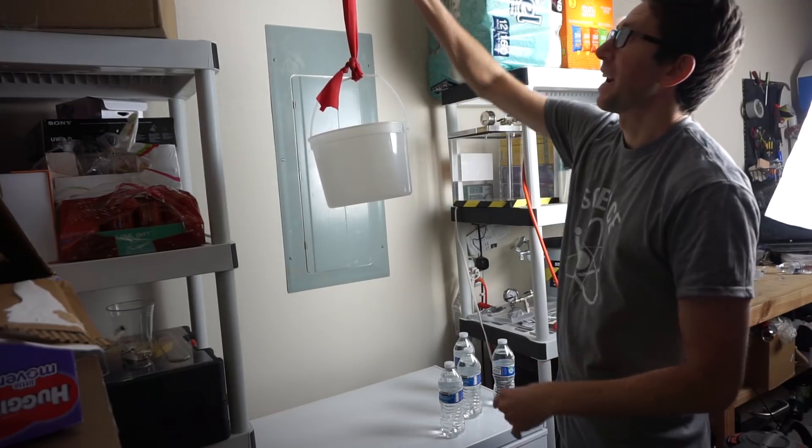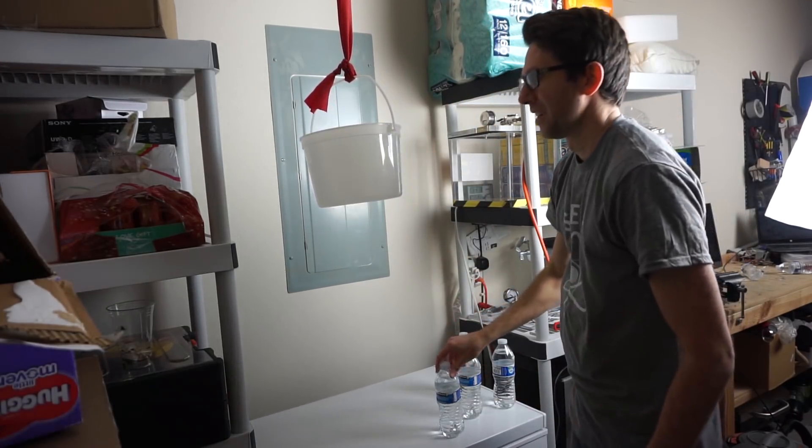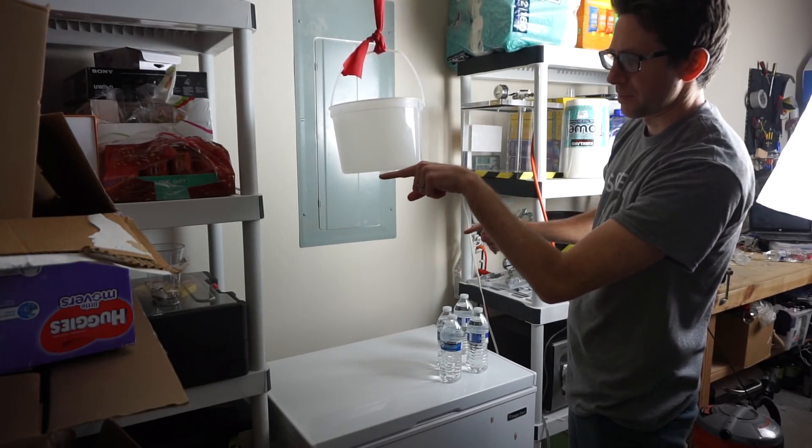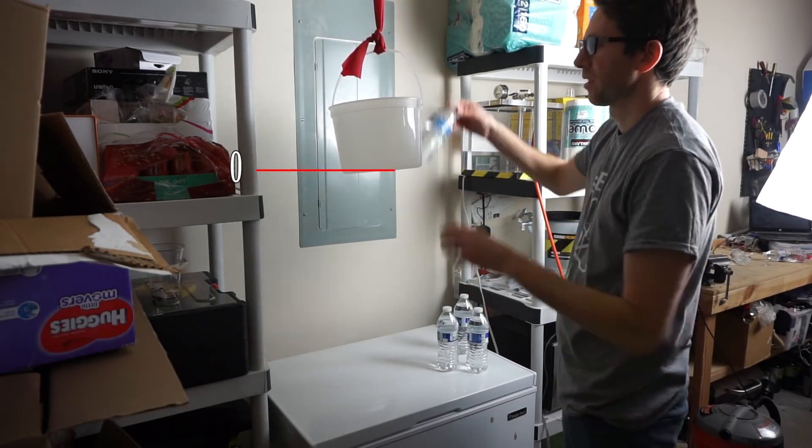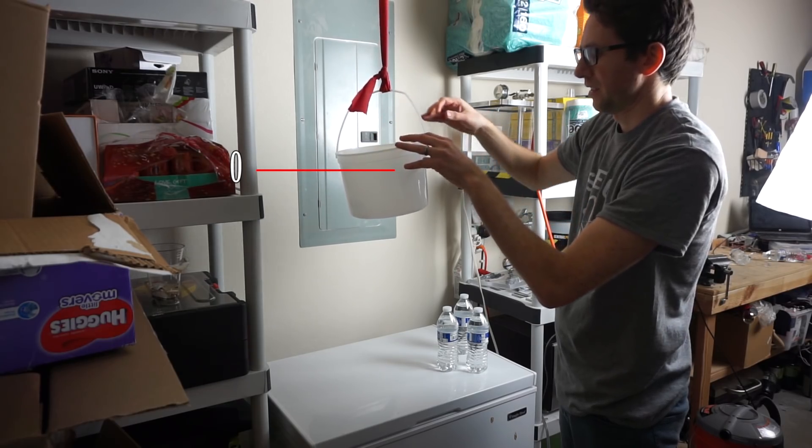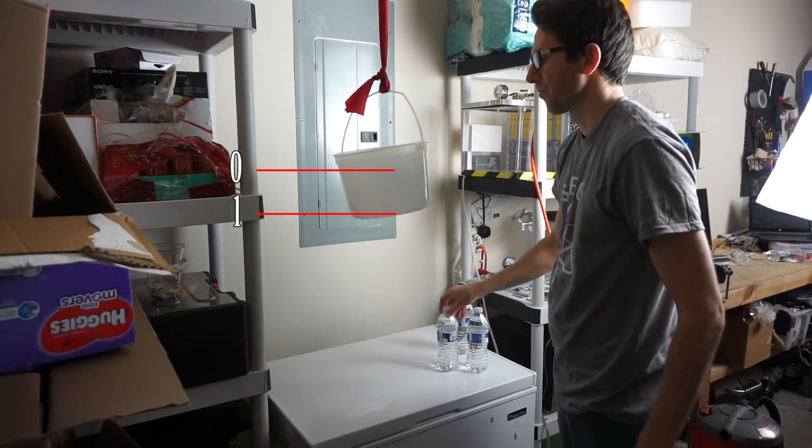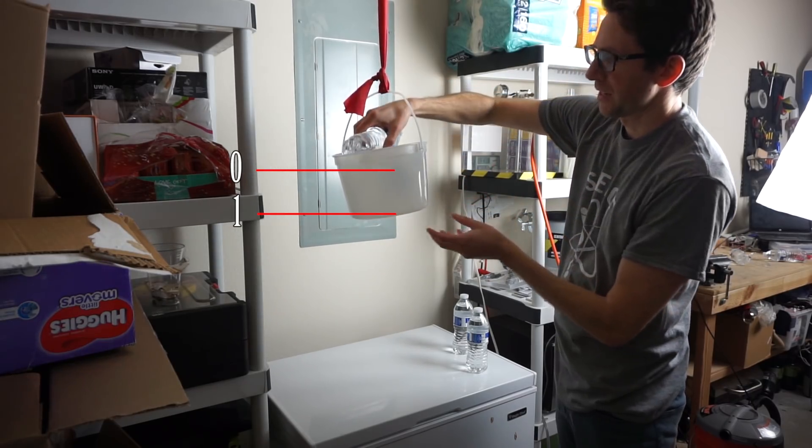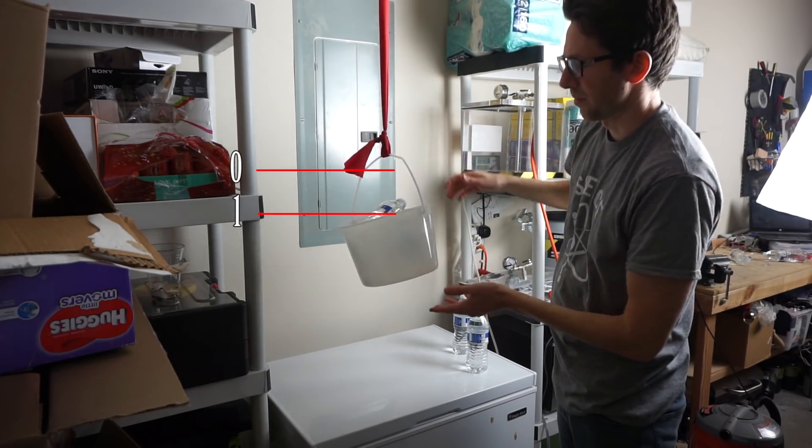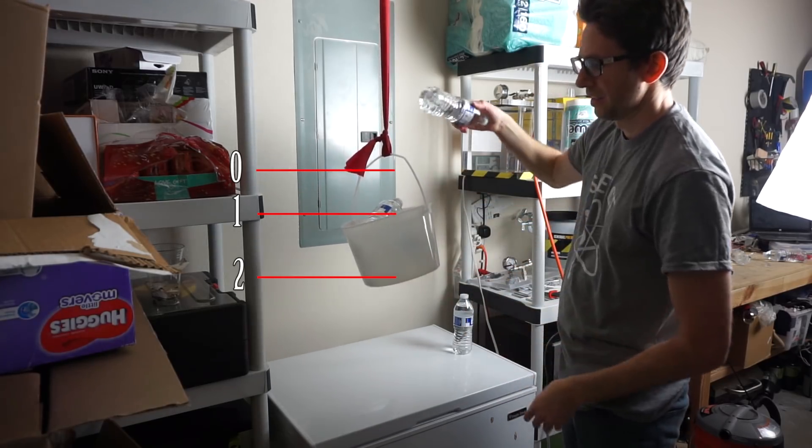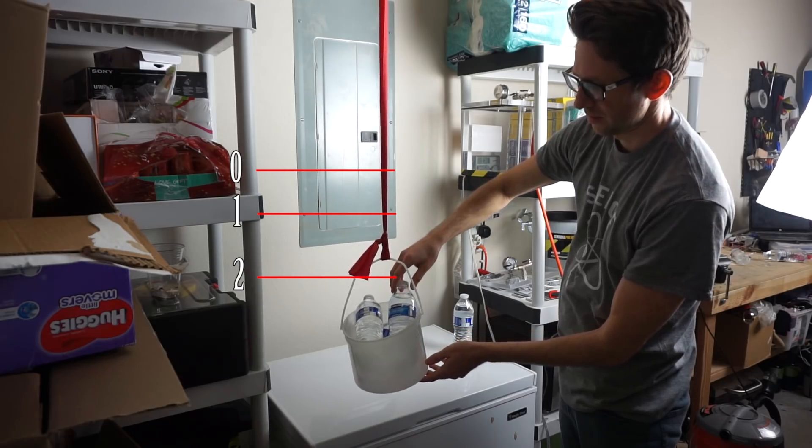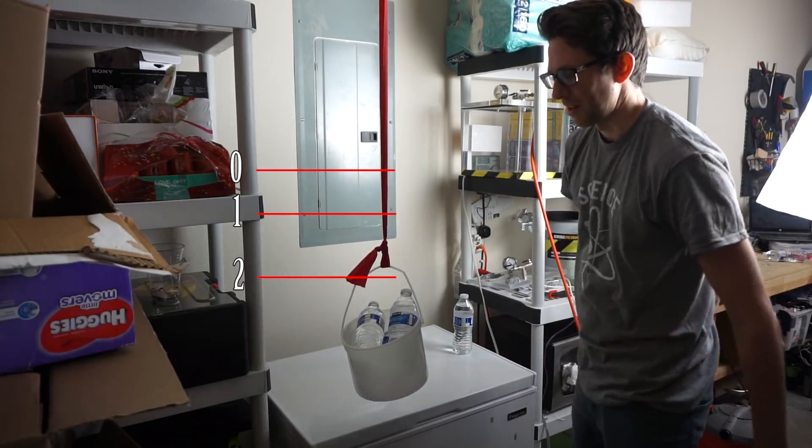So for example, I have here a latex band and a bucket here. And I'm going to put weights in the bucket. So with no weights in it, it comes to about here. With one weight in it, it comes to here. With two weights in it, it comes to right here. And with three weights in it, it comes to right here.